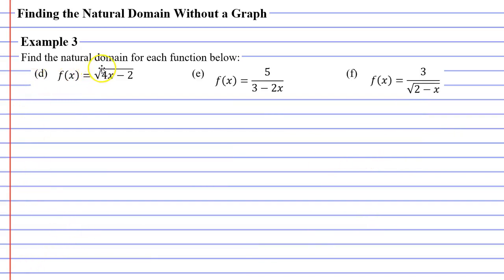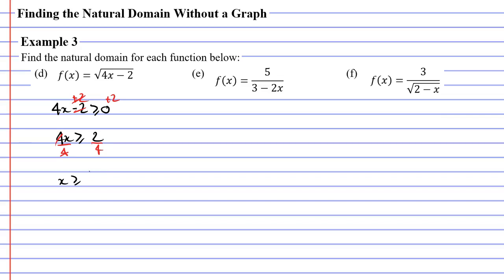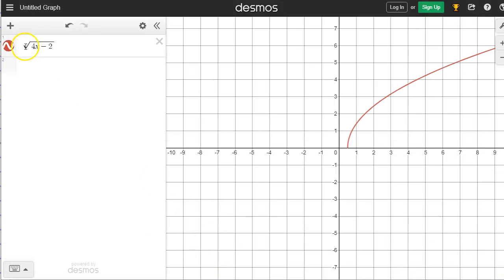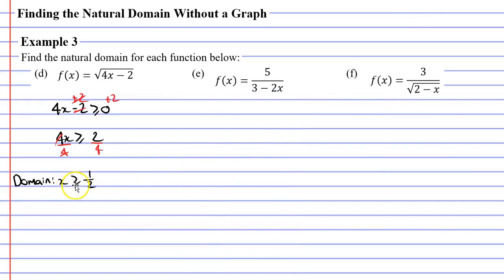Question D also has the square root sign, so we cannot have a negative under the radical. We write that 4x minus 2 must be greater than or equal to 0. Adding 2 to both sides gives 4x ≥ 2, then dividing both sides by 4 gives x is greater than or equal to one half. Checking in Desmos, the graph of sqrt(4x-2) starts at x = 1/2 and goes forever to the right, confirming our domain.